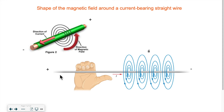Now how do we determine what the field looks like in terms of which way it rotates? Because it actually rotates either clockwise or counterclockwise depending on which way the current is going. So I'm going to show you how to determine that.